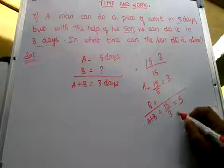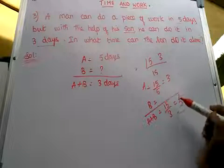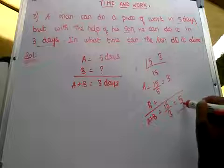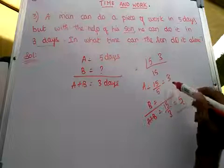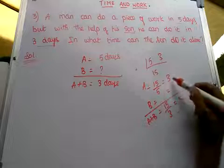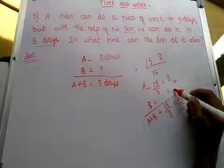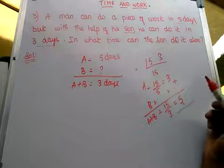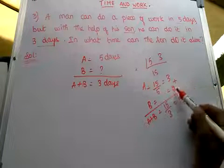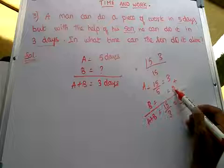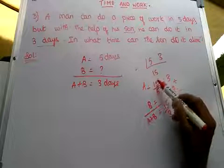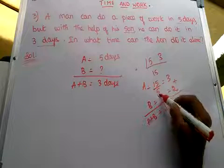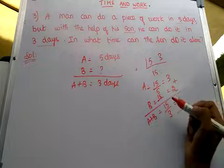Here A equals 3 and A plus B equals 5. What do we need to add to 3 to get 5? We need to add 2. So 3 plus x equals 5, therefore x equals 2. We need to find what number, when we divide 15 by it, gives us 2.